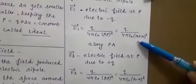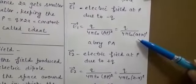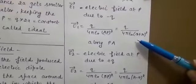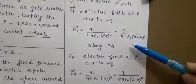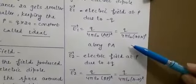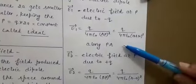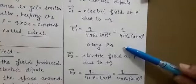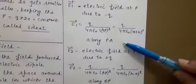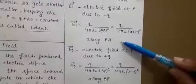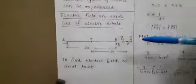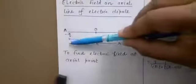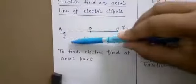This is the magnitude of electric field at P due to minus q charge. We are not including the negative sign because the negative sign helps us determine the direction of the electric field. The electric field E1 is directed along P to A, as you can see in the figure.